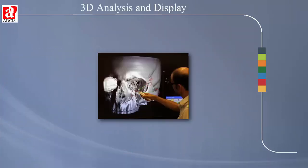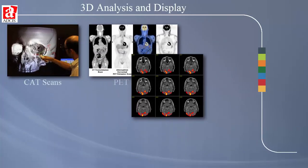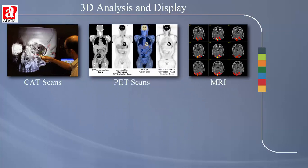Welcome. Today CAT scans, PET scans, and MRIs are popular ways of getting 3D images.